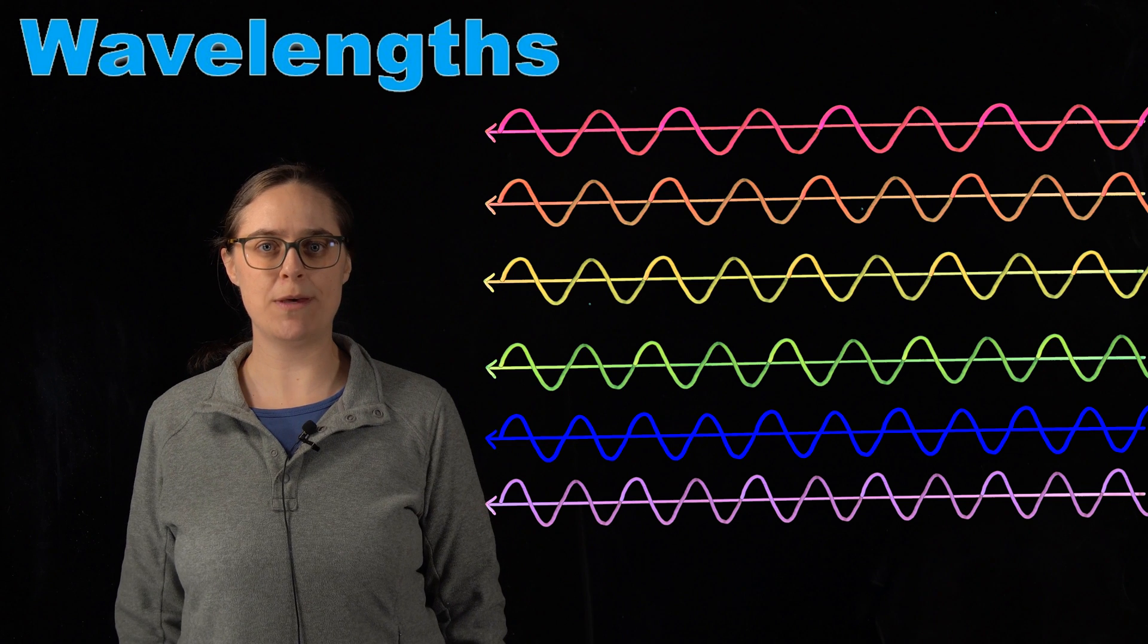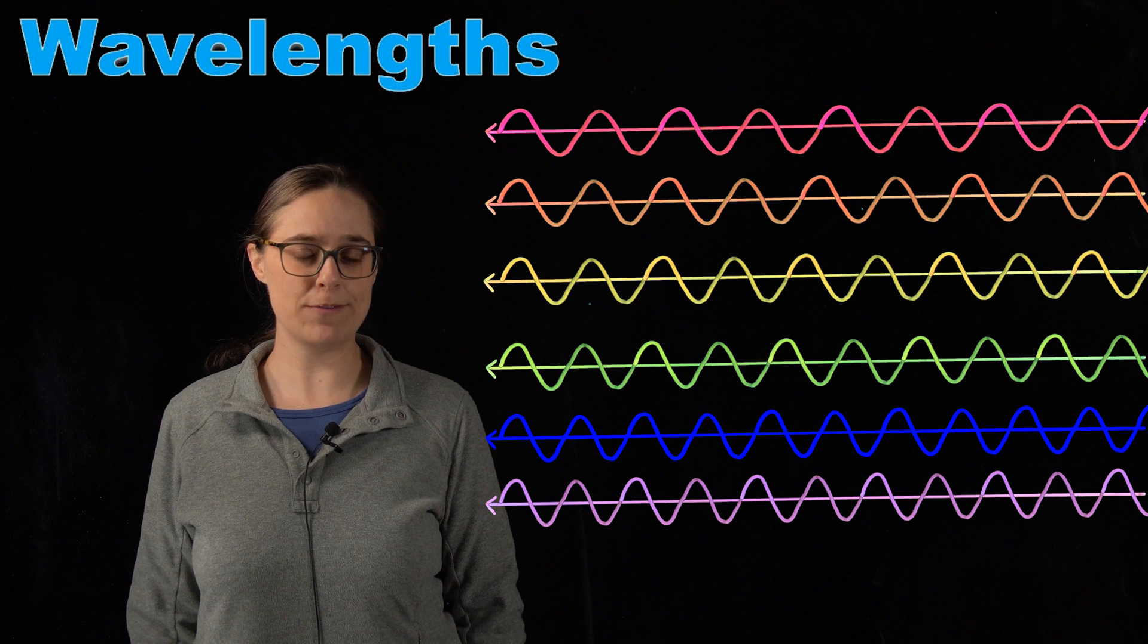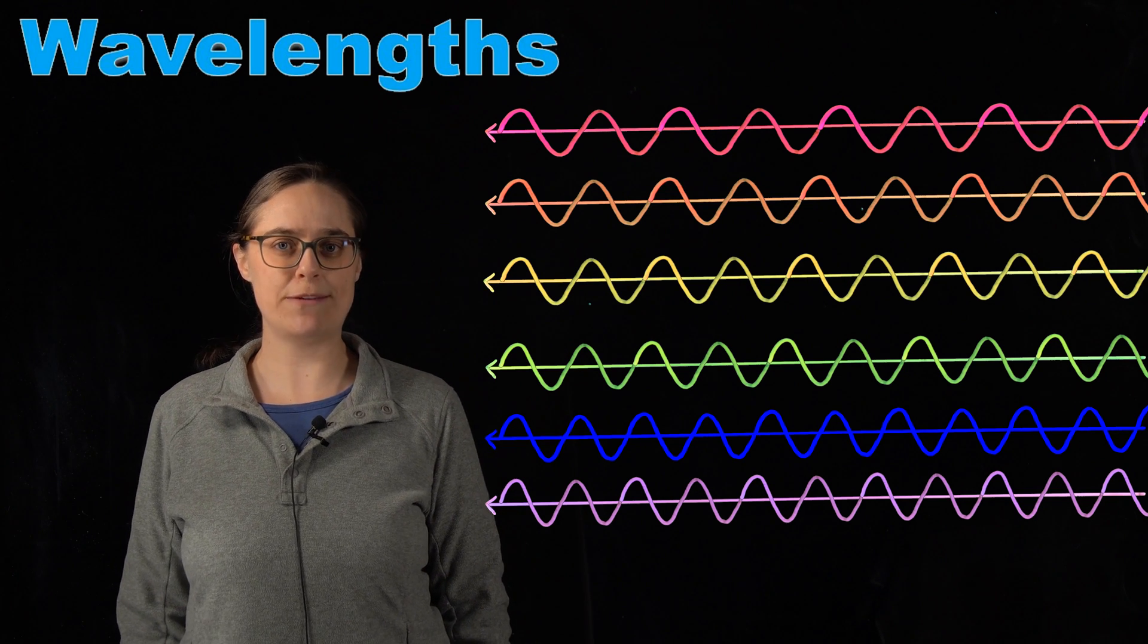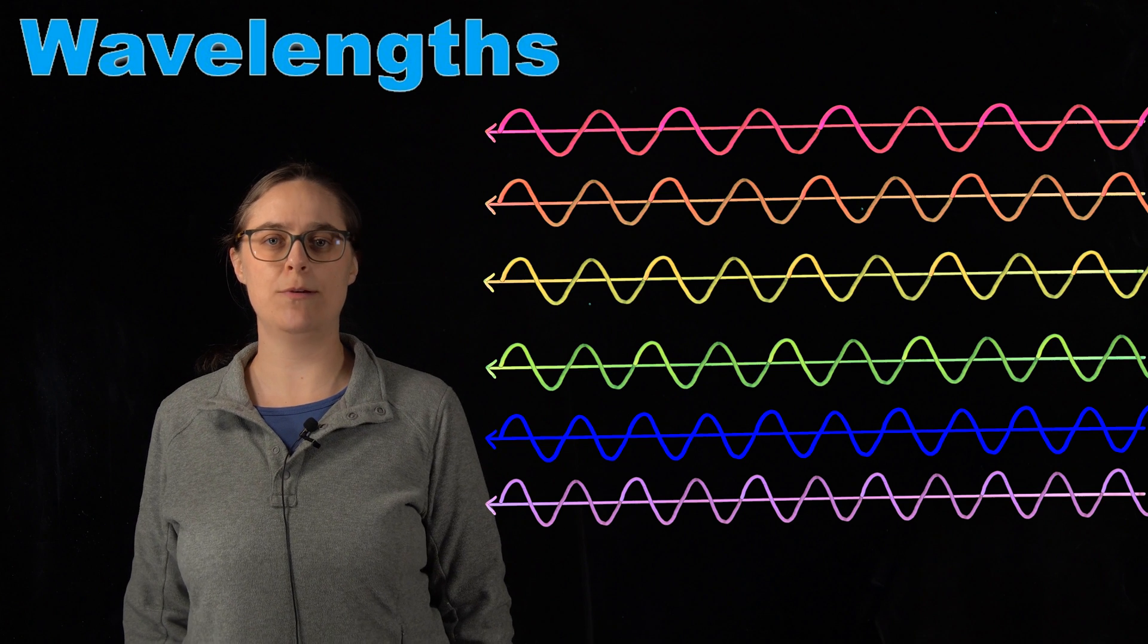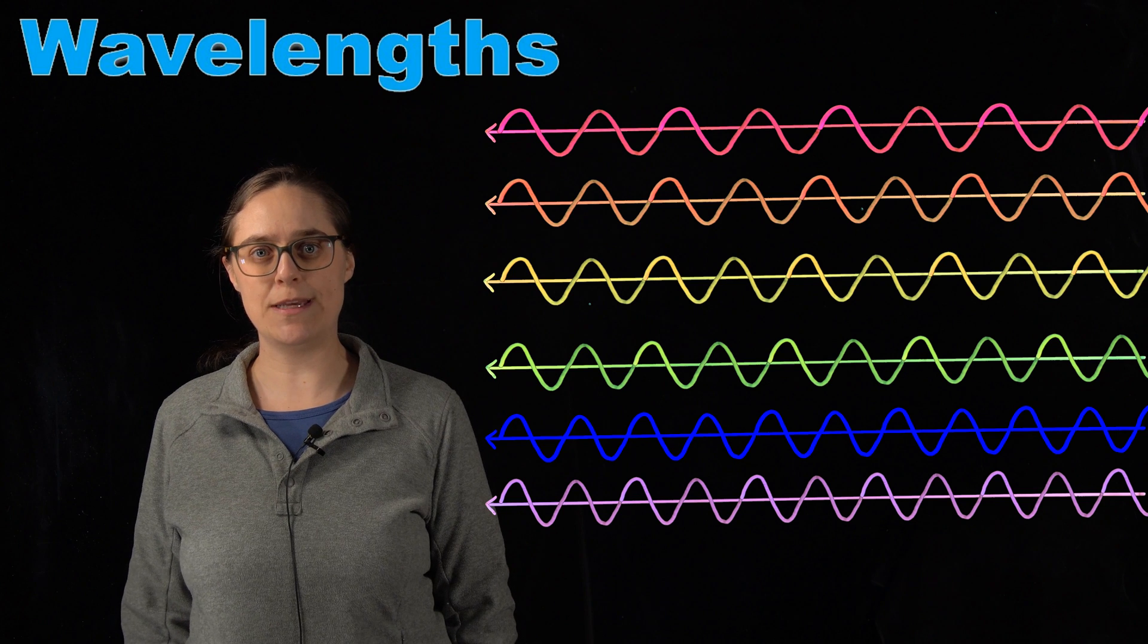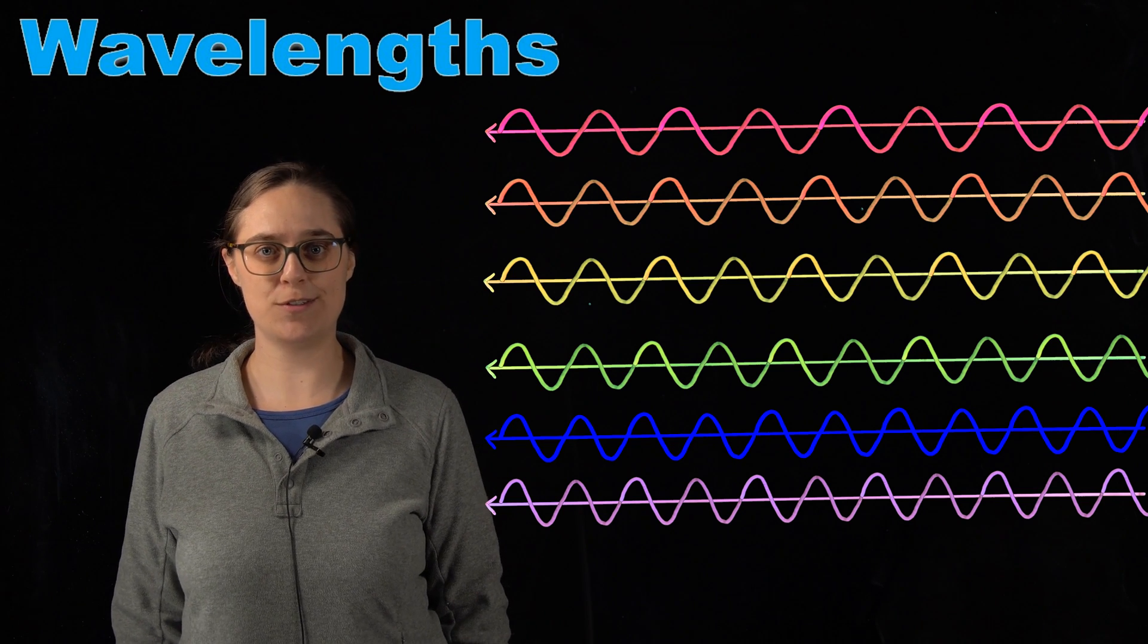So if we are talking about the visible region of the electromagnetic spectrum, we perceive different wavelengths to be different colors. So a wavelength of about 750 nanometers, we would perceive that as red. And we can see all the way down to a wavelength of about 400 nanometers, which is violet. And everything in between would be various colors of the rainbow.